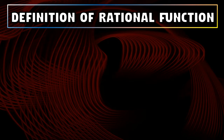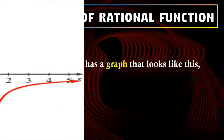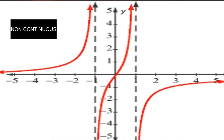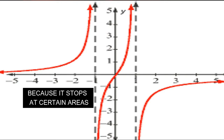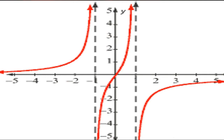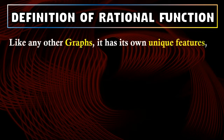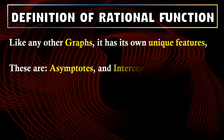The graph of a rational function looks like this. The graph is non-continuous compared to any other graph that you'd faced during your high school days, and that is because of the dashed line between the curves, which will be discussed later as the lesson goes by. Like any other graph, a rational function has its own features — the so-called asymptotes and intercepts.